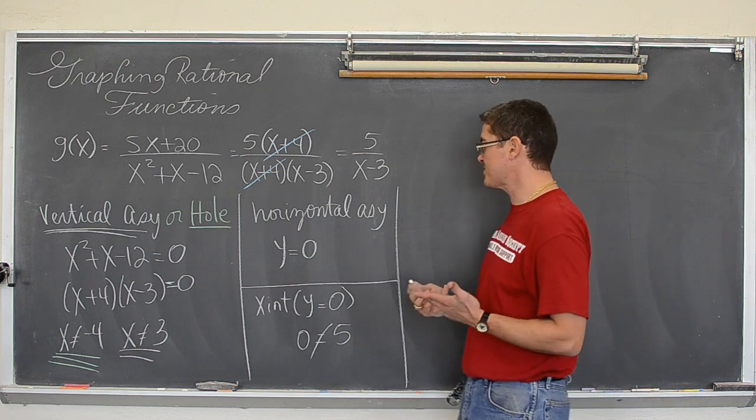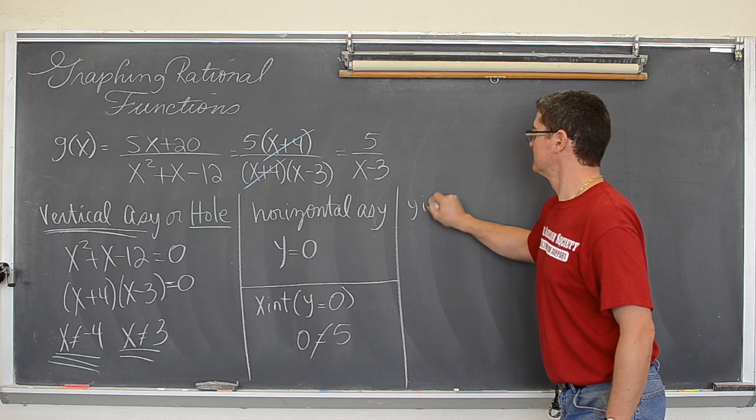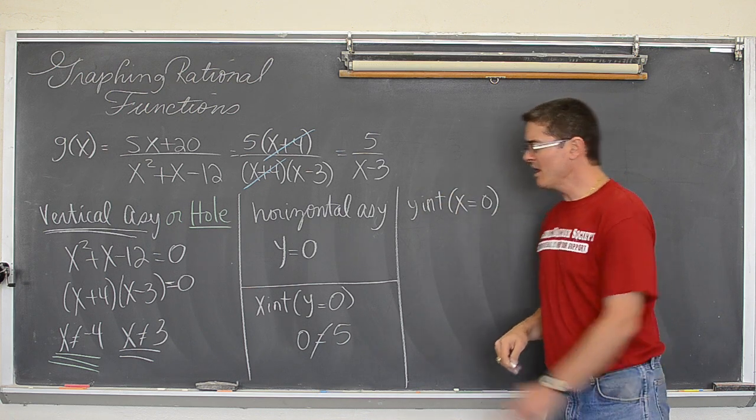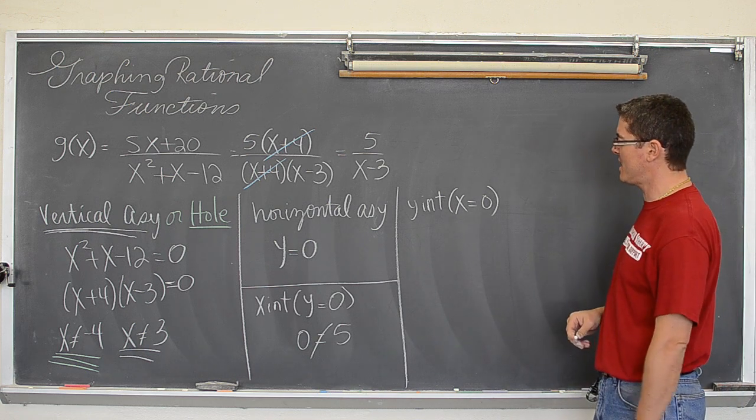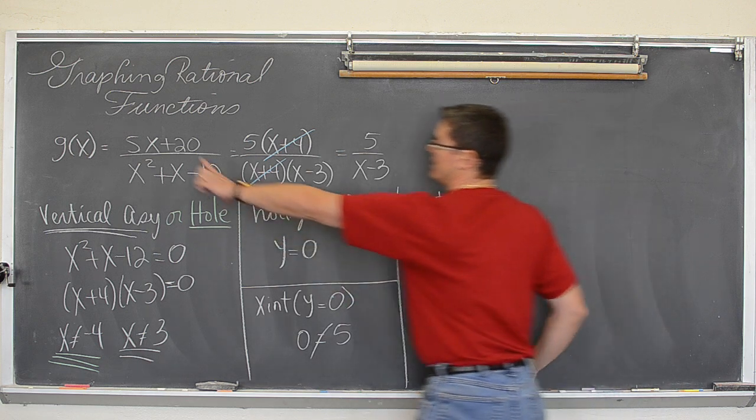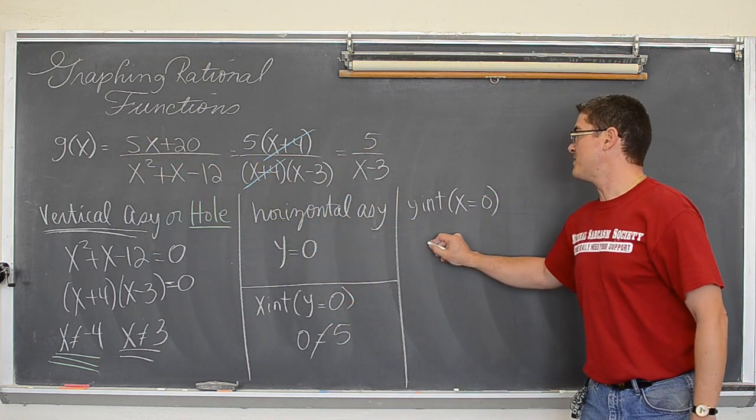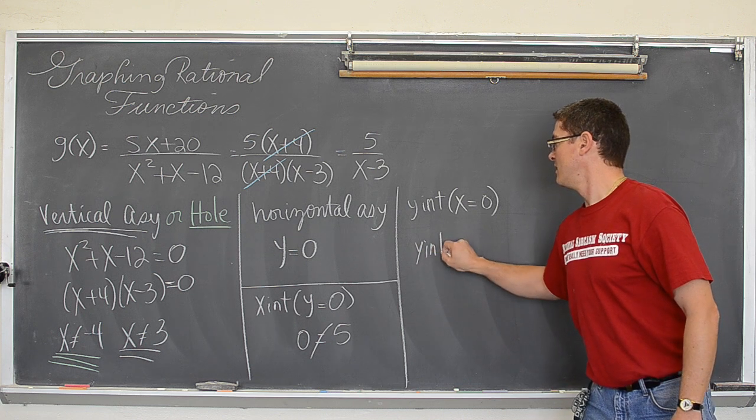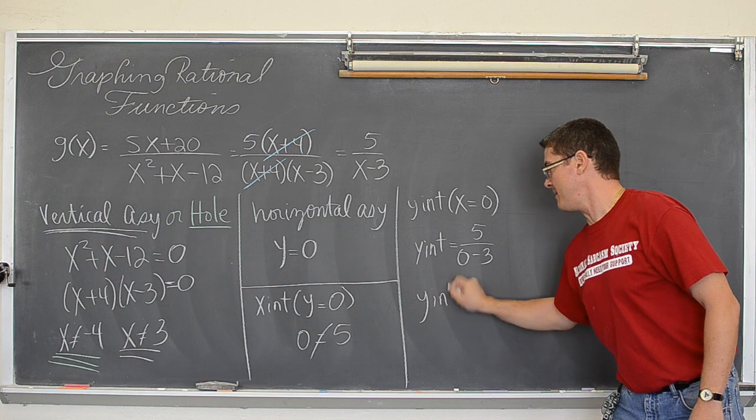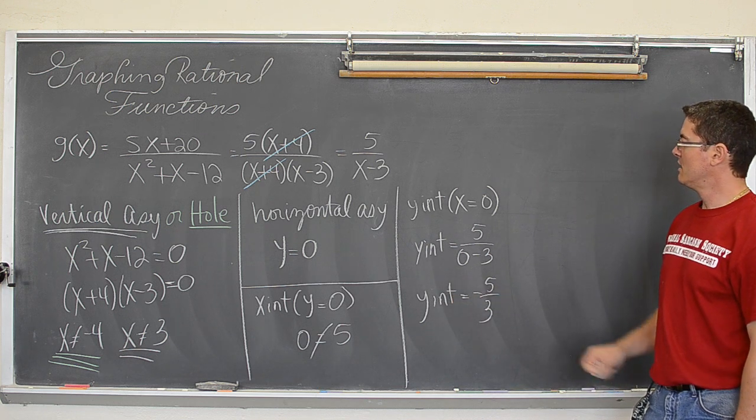Now moving on. What else could we possibly have? Well, what about a y-intercept? That is when x equals zero. I might not have any room to draw my graph after I am done filling all this up. Let's see. Let's let x equal zero. Whether you do it here or here with the reduced function, it will not make any difference. The y-intercept is going to be 5 over (0 - 3), or the y-intercept is going to be equal to negative five-thirds.